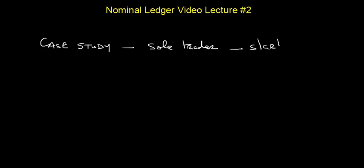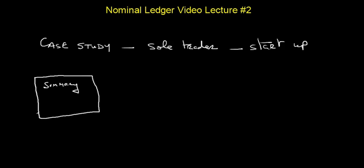Before we go into it, let's quickly review the various stages we'd be following as we prepare the nominal ledger for this case study. The first step in the process is a summary of the books — all the various books we discussed in our last video lecture: the sales book, purchases book, payments book, cash receipts book, and so on.